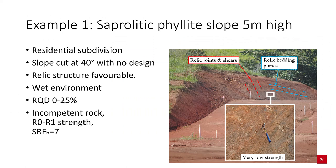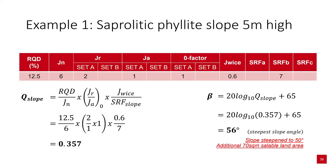Let's look at some case studies. Here is a 5m high slope excavated in saprolitic phyllite for a residential subdivision, cut at 40 degrees with no design. The relic structures — joints, shears, and bedding planes — are quite favourable as they're striking into the slope. Applying Q-slope: RQD of 12.5 on average, joint set number of 6, joint roughness of 2, JA of 1, favourable orientation factor of 1, J-wise of 0.6, and SRF-B of 7. This gives a Q-slope value of 0.357, corresponding to a long-term stable slope angle of 56 degrees. The slope was steepened to 50 degrees, making an additional 70 square metres of saleable land available for the client.